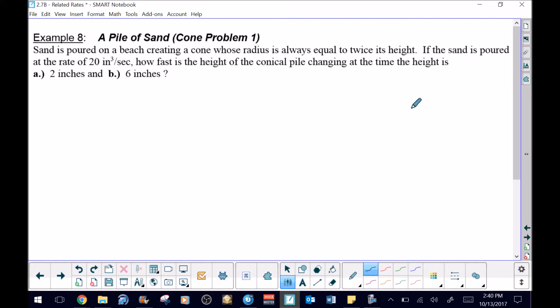In this situation we're gonna go to the beach and take some sand and pour it out on the beach. When we do so it's going to create a cone, and this actually does sort of happen to an extent—you have to make sure that the sand has a certain amount of moisture to it. But when we do that, the cone that is going to be made will have a radius that's always equal to twice the height.